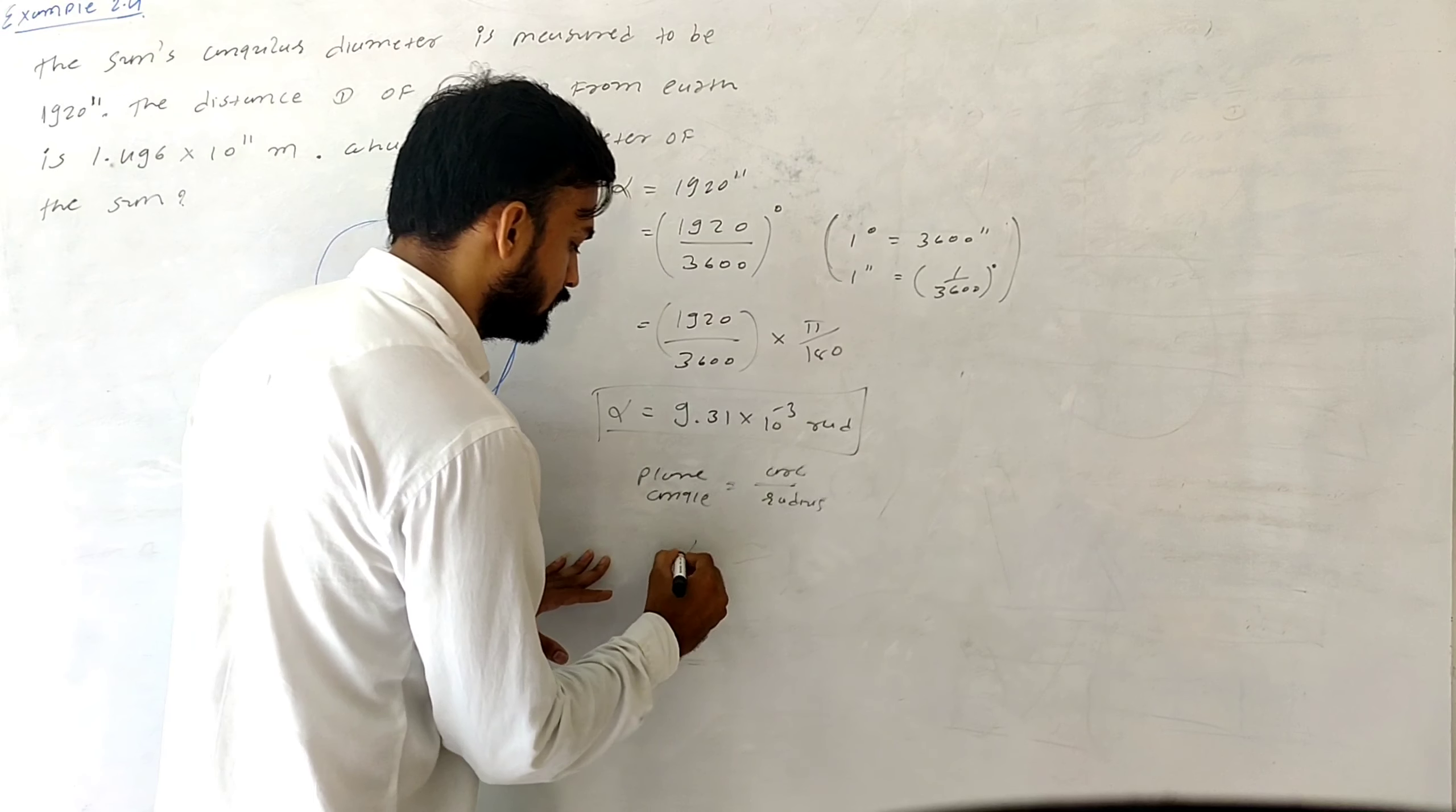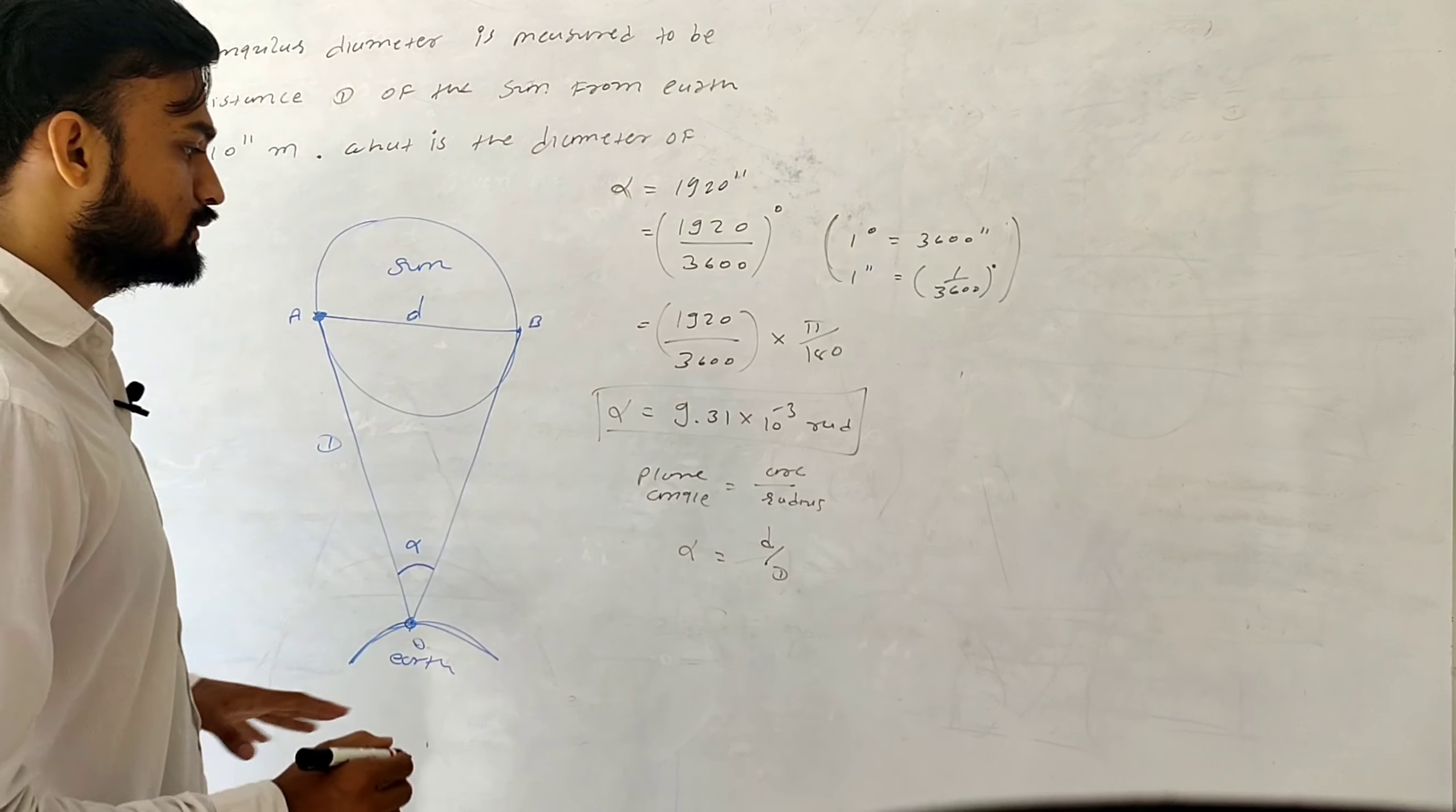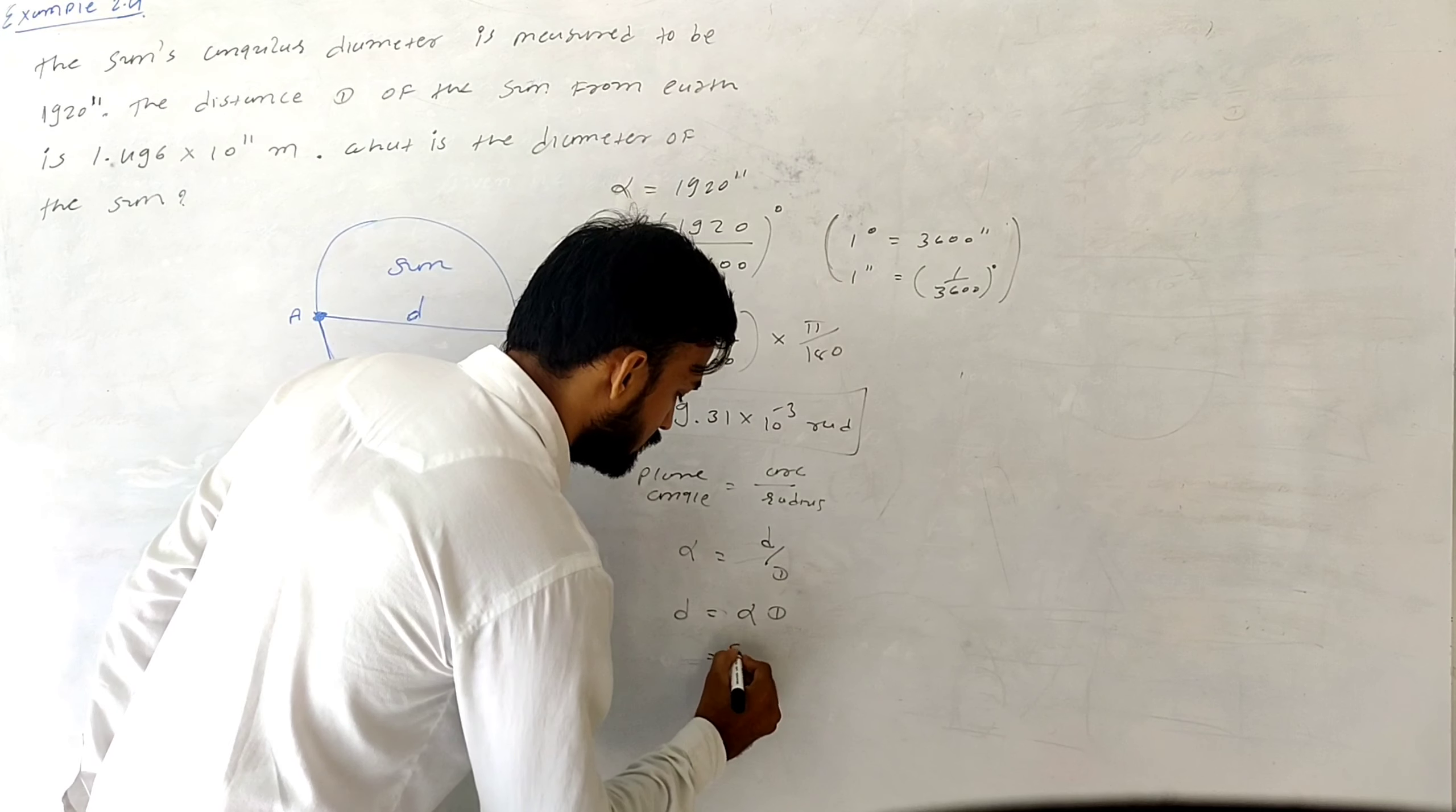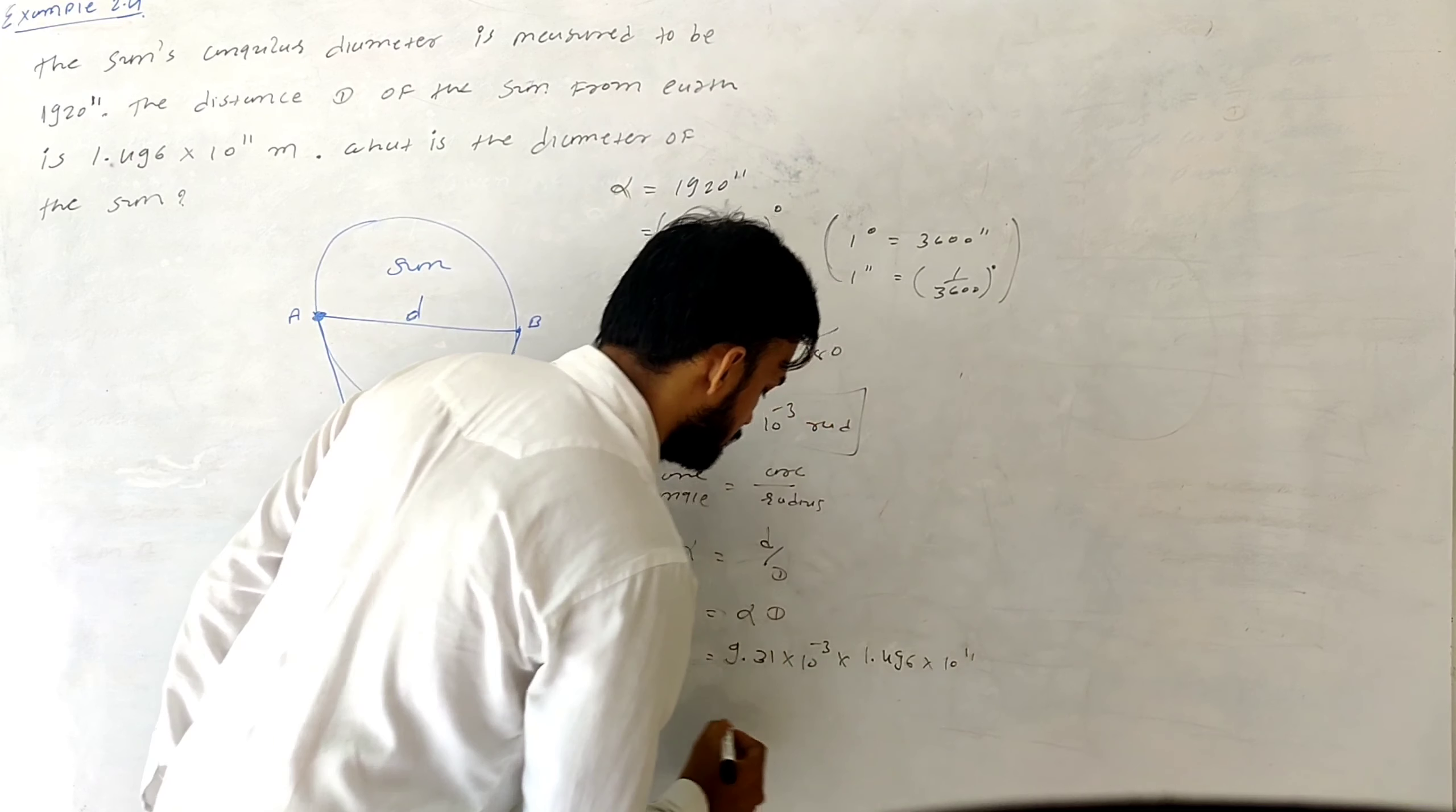The arc is small d and the radius is capital D, which is 1.496 × 10^11. I have to find out small d, so small d will be alpha times capital D. Putting the value of alpha: 9.31 × 10^-3 radians times capital D which is 1.496 × 10^11.